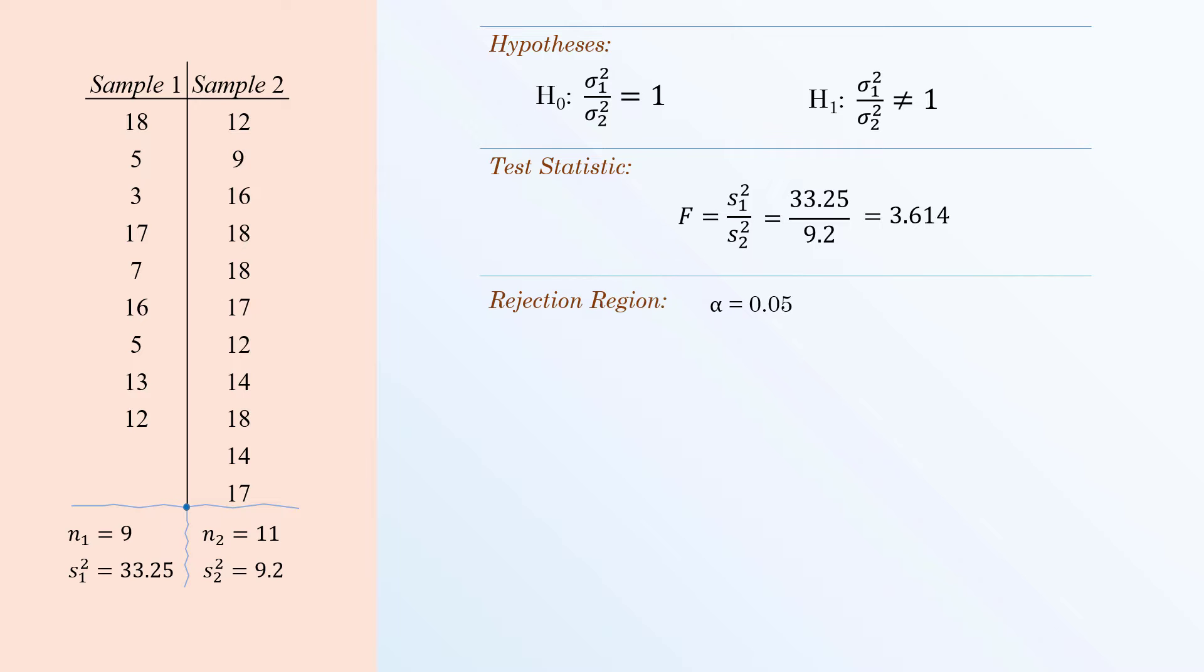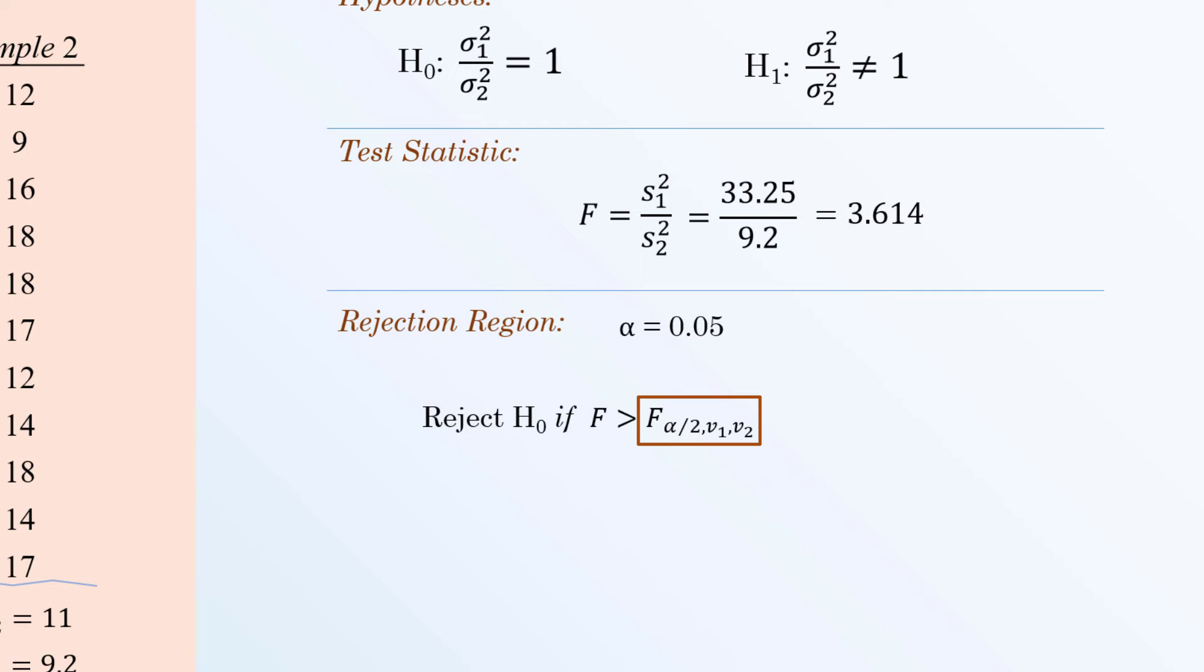Testing at alpha equals 0.05, we will reject the null hypothesis if the p-value of the test is less than or equal to 0.05, or if the test statistic is greater than this critical value.